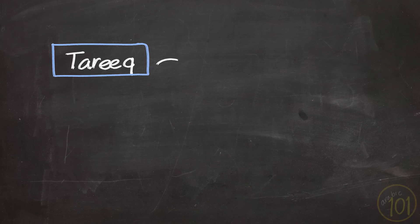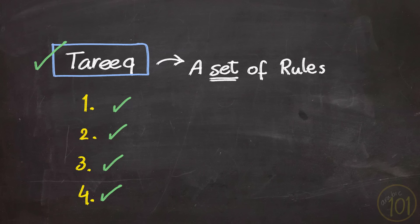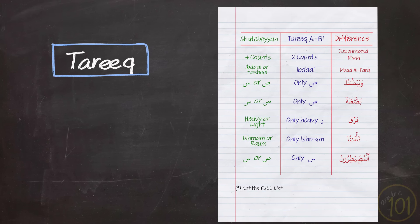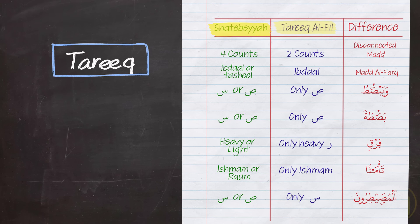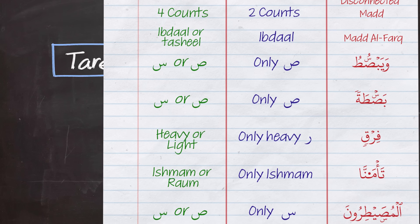The important thing to know about tariq is that it is a set of tajweed rules or options that you as a learner are expected to follow. So if you follow one tariq, it is expected that you adopt the whole package or the entire set of rules. That's why there are several guides explaining the differences between, for example, Ash-Shatubiyya and Al-Fiyl, showing you the set of rules that each tariq contains.